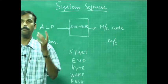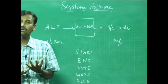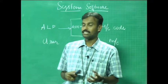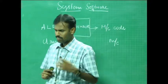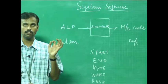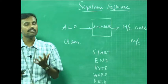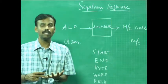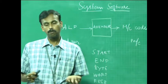OPTAB contains mnemonics and machine codes, as well as the instruction format and the length of each instruction. It is always a static table, and you can perform lookups from it. It can be implemented using either an array or a hash table, with a hash table being more efficient for searching.